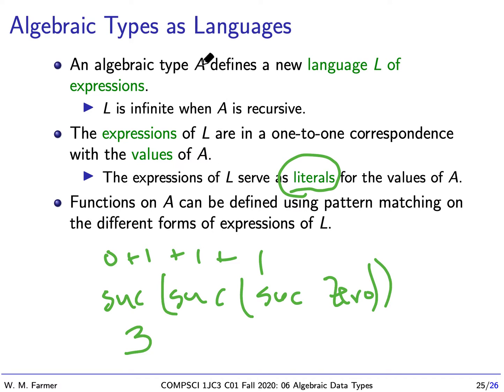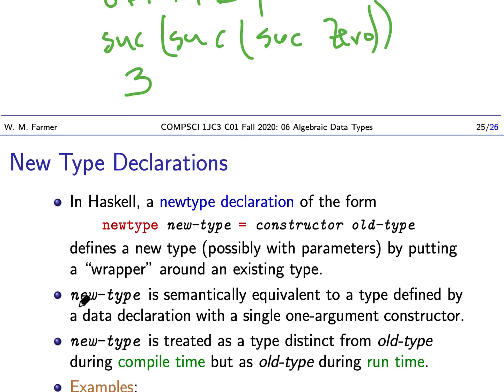Now if we define functions on any algebraic type, the most convenient way to do it is define them using pattern matching. And we match on the different forms of the expressions in L. That's the basic idea. This really summarizes the power of algebraic data types. And let me also remind you, another important part of algebraic data types: every algebraic data type has a structural induction principle that goes with it for proving statements about properties over the type.